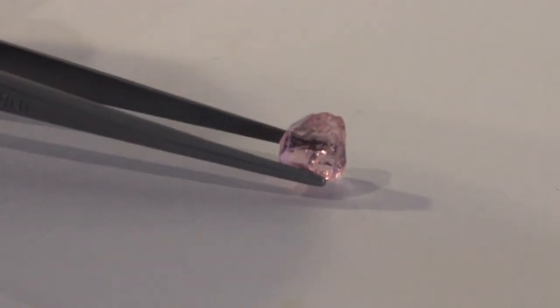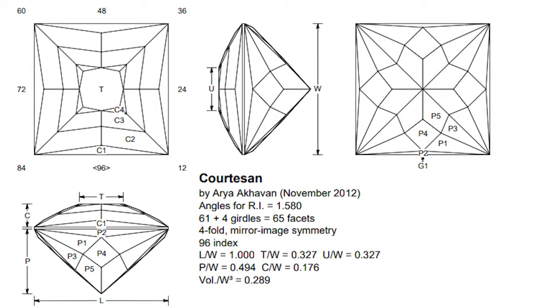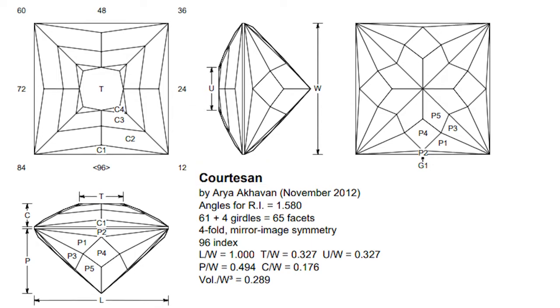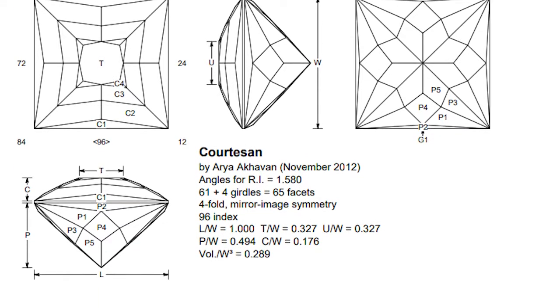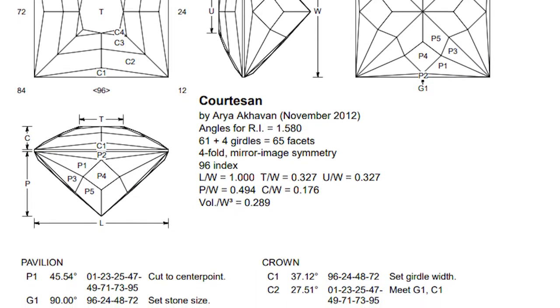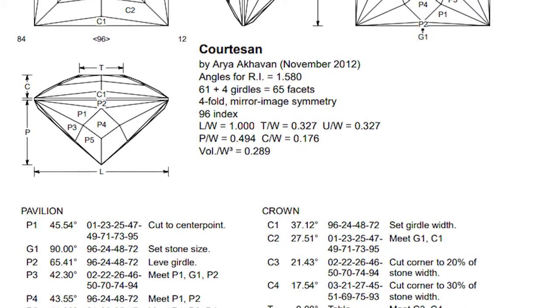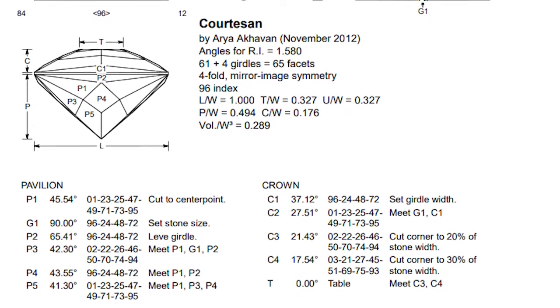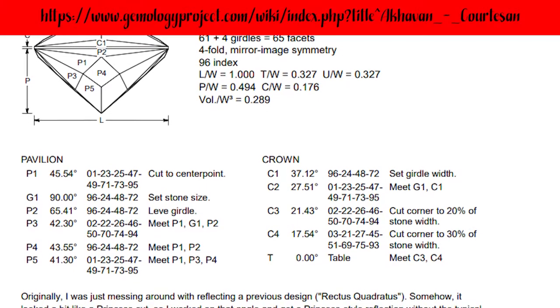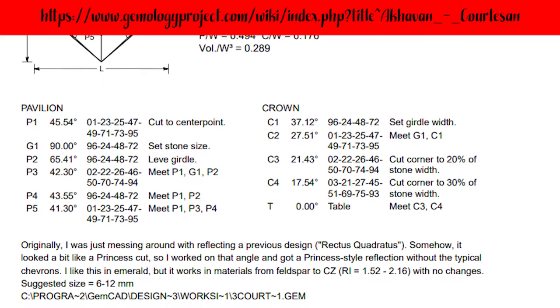This rough is already sort of a square shape, so I'll lose the least amount of rough by using a square design. I looked at a lot of square designs and decided I'll use a square design called Courtesan by Arya Akhavan on this rough. I've not cut Courtesan before, but I have cut several of Arya's designs, and they always turn out great. Square designs in general are not difficult to cut, so I'm not expecting a lot of issues. Like many of his other designs, Arya put this design into the Gemology Project website for any cutter to enjoy trying to cut.